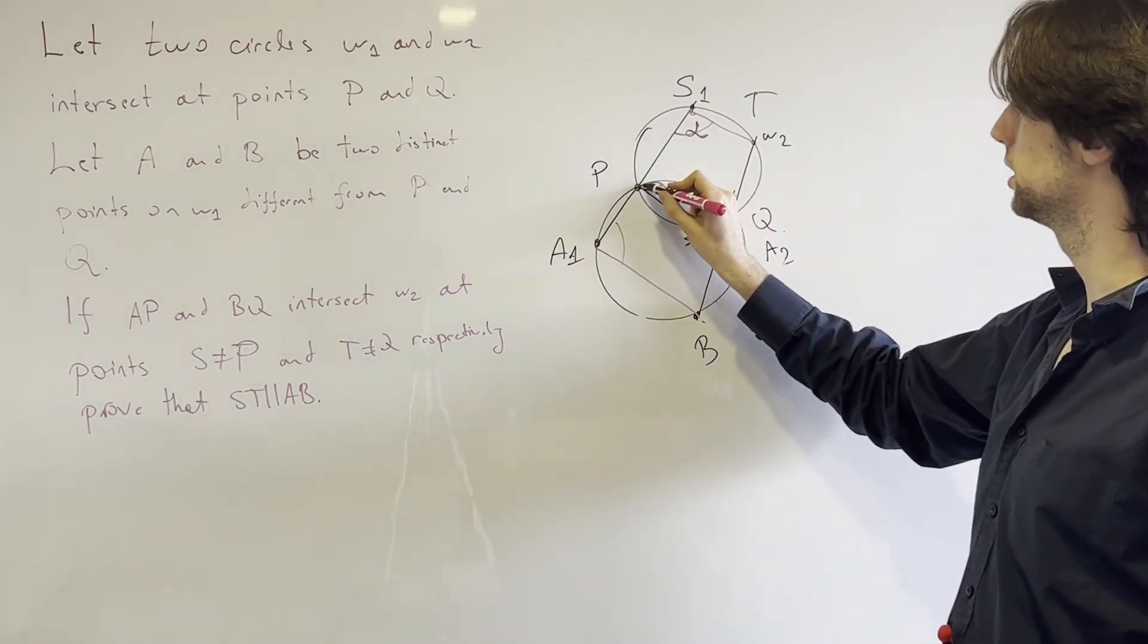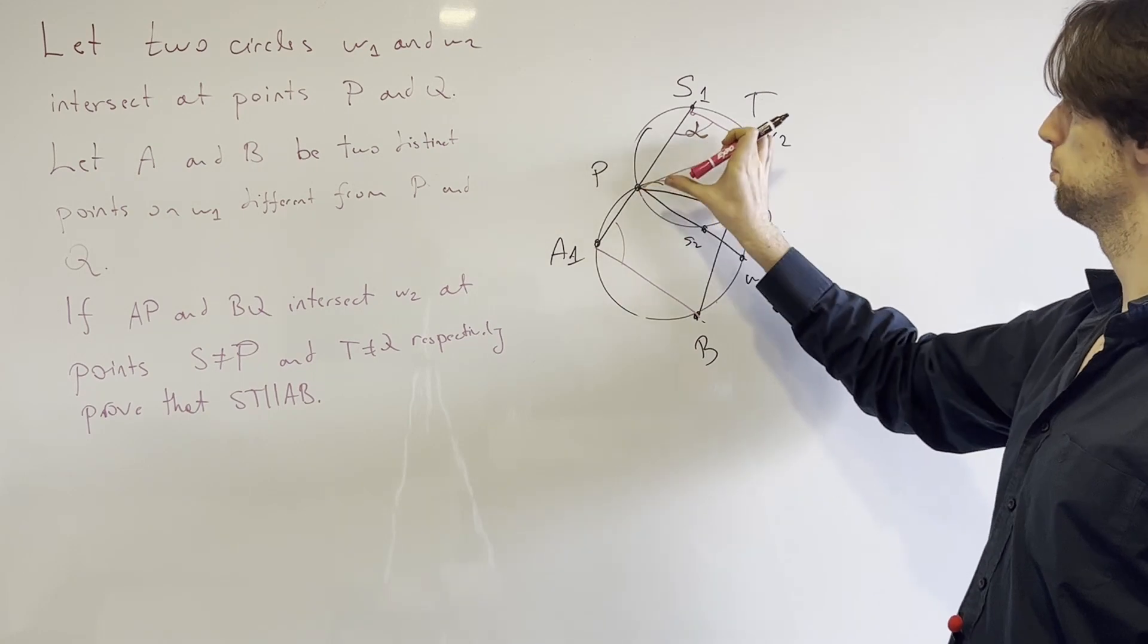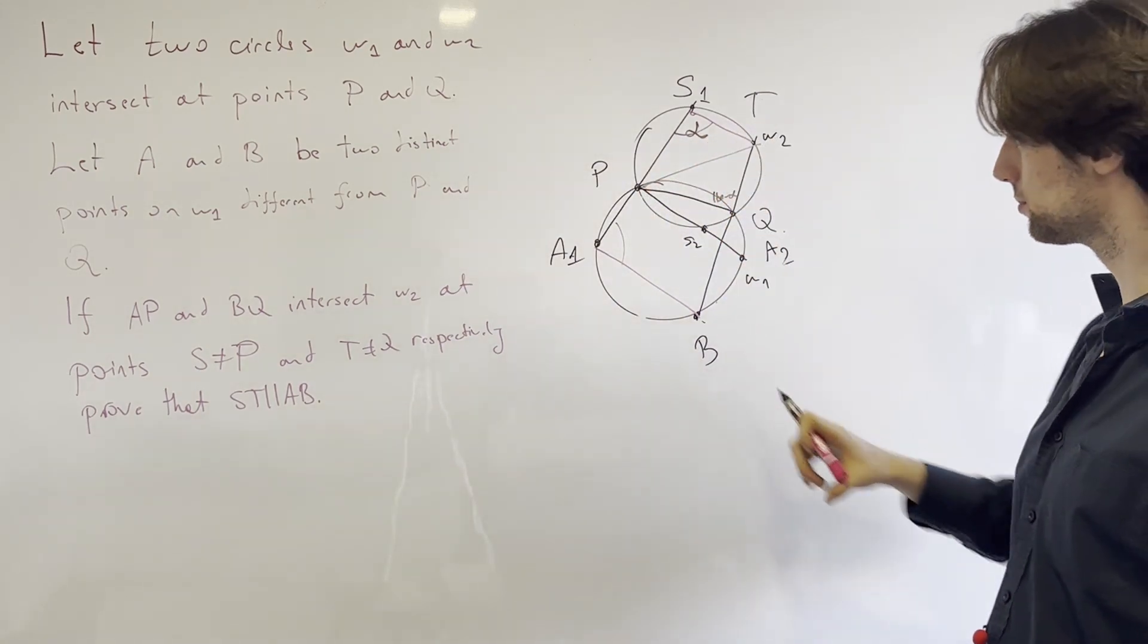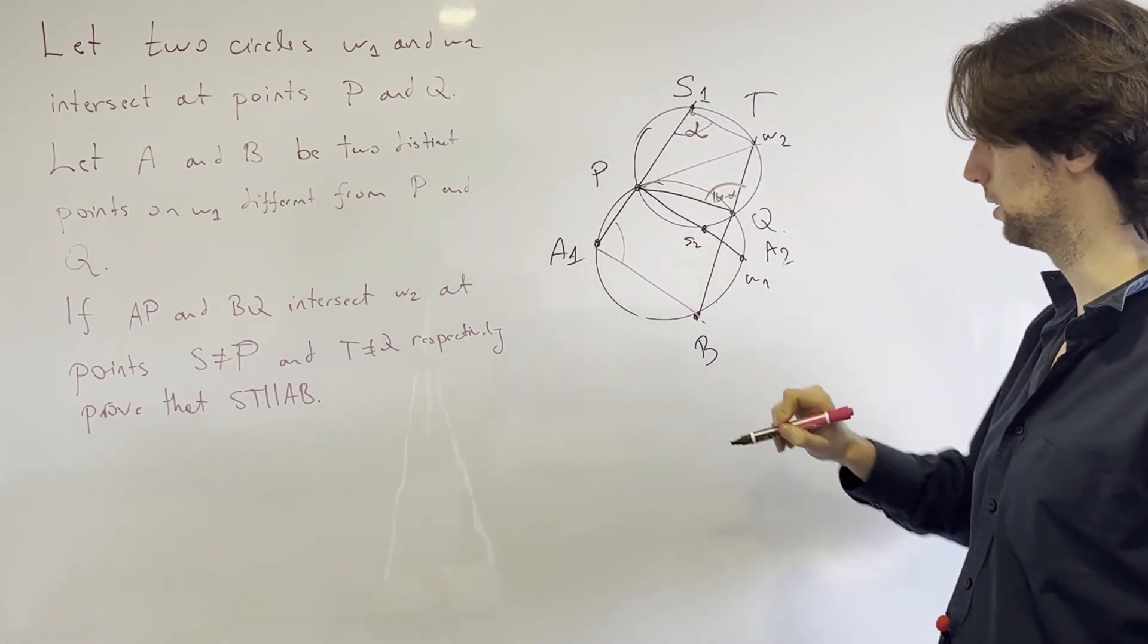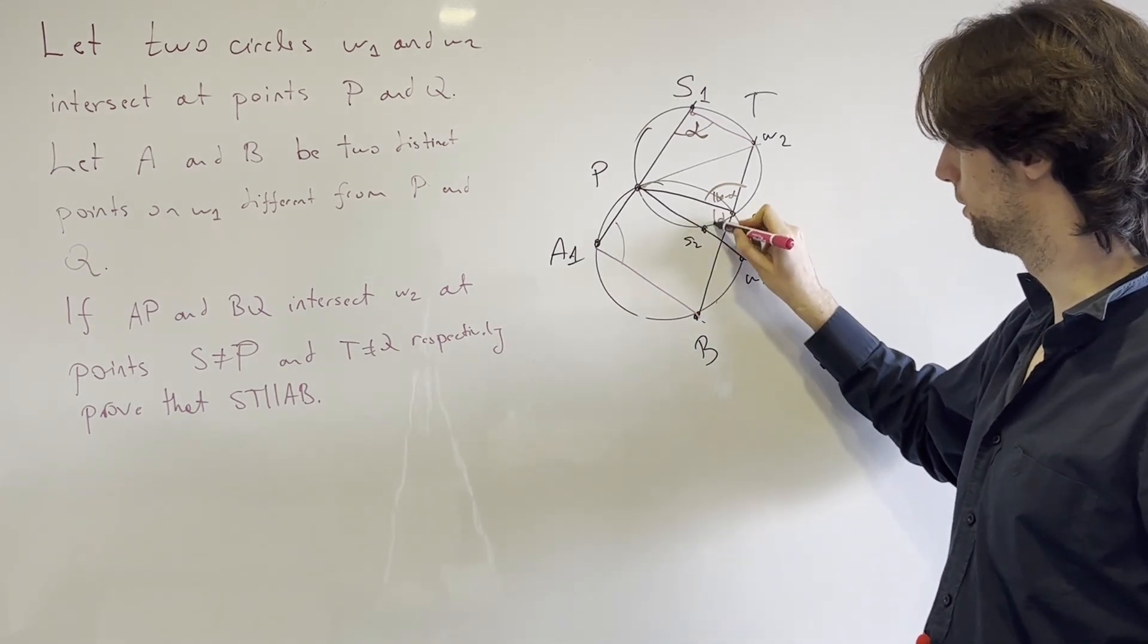And the answer is you have, well that this is 180 minus alpha because these are in the chord PT. So this was 180 minus alpha, which makes this whole angle alpha.